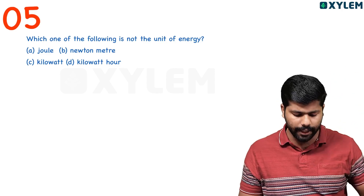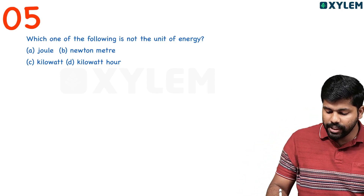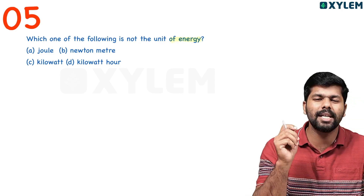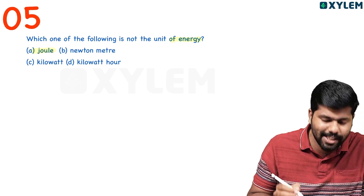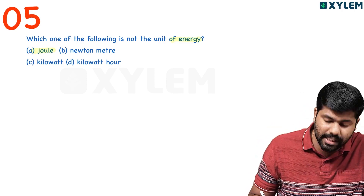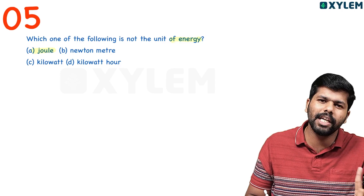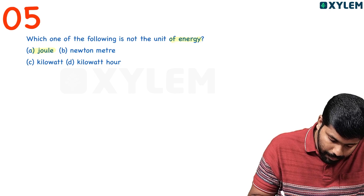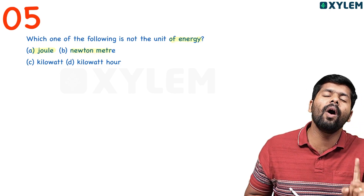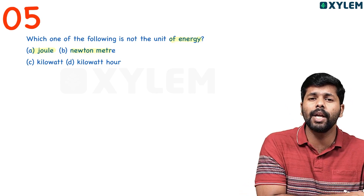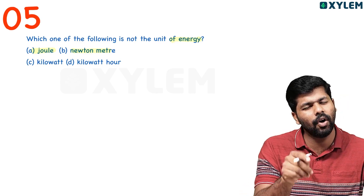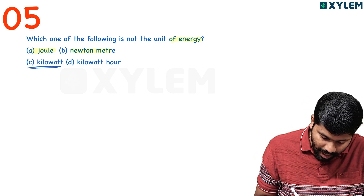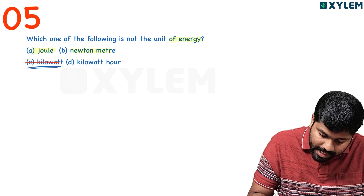Fifth question: Which of the following is not the unit of energy? Joule is the unit of energy. Newton meter — since work equals force into displacement, Newton times meter is also correct. Kilowatt — what is the unit of power? Kilowatt is actually the unit of power, not energy. So kilowatt is not the unit of energy. Correct option: C.